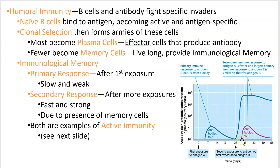If you get another antigen you're going to have a primary response to it — any new antigen requires a brand new primary response. The secondary response is much faster and much stronger because you have those memory cells around. Both of these are forms of what we call active immunity because you're building your own antibodies. Active immunity is something you're actively involved in — for example, if repeatedly bitten by a certain snake species you'd eventually build up antibodies to it. In both primary and secondary responses you're developing memory cells and producing antibody, so they're both active immunity.